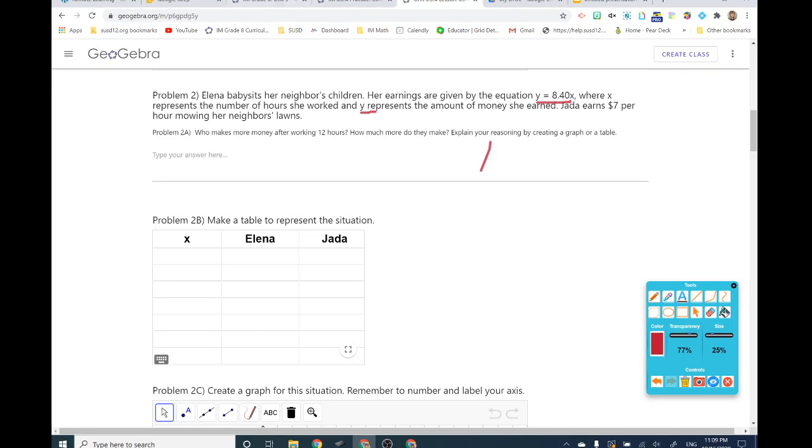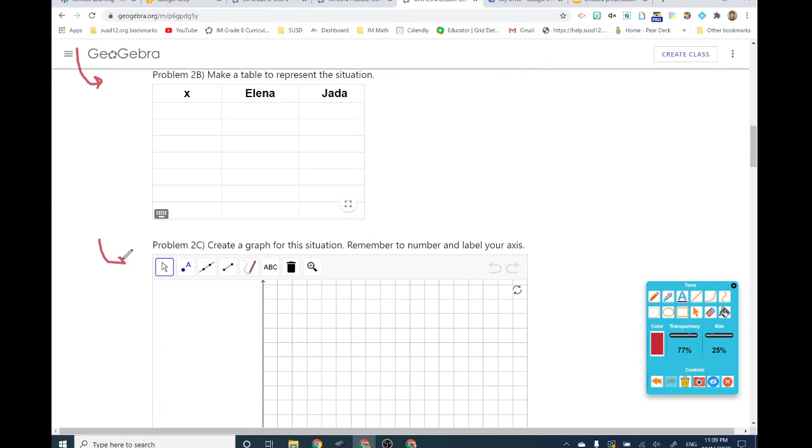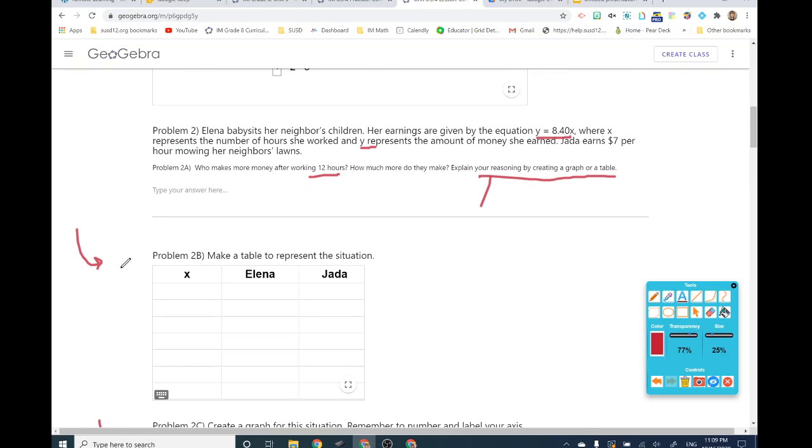Now what are we going to do with this information? Let's read the question again. It says who makes more money after working 12 hours? How much more do they make? Explain your reasoning by creating a graph or a table. They have a table that we're going to fill out and a graph that we're going to fill out. This time we are comparing two different proportional relationships.